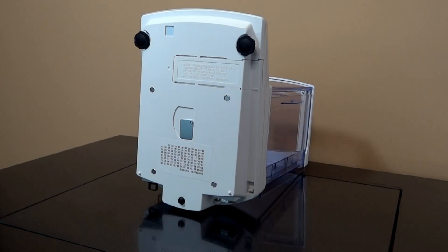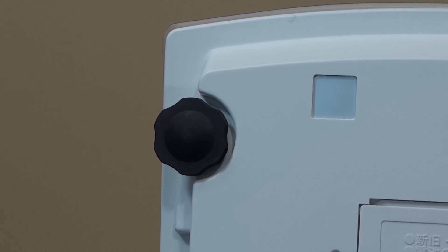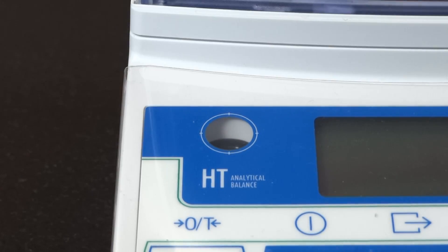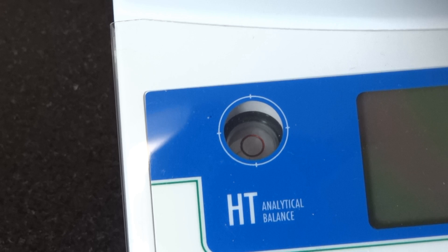Starting from the bottom of the balance, the HT has three support points, two of which are adjustable. There is a spirit level next to the display to help with leveling.